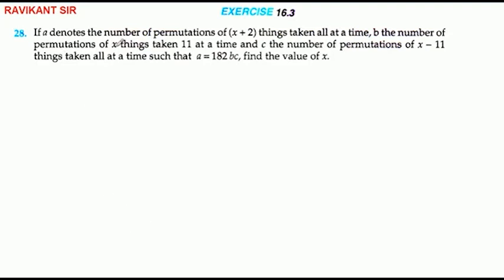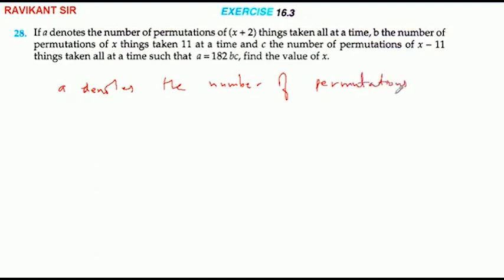Number 28. If A denotes the number of permutations of X plus 2 things taken all at a time.